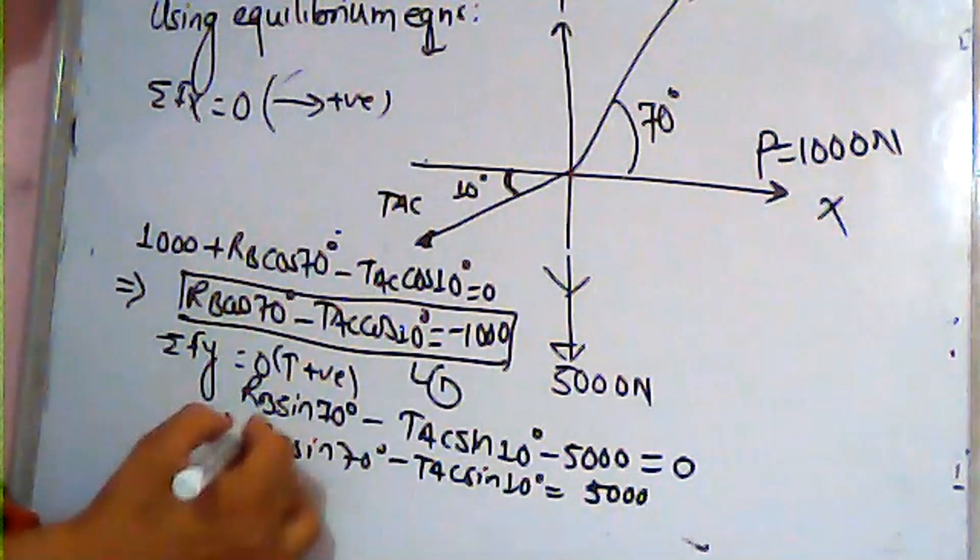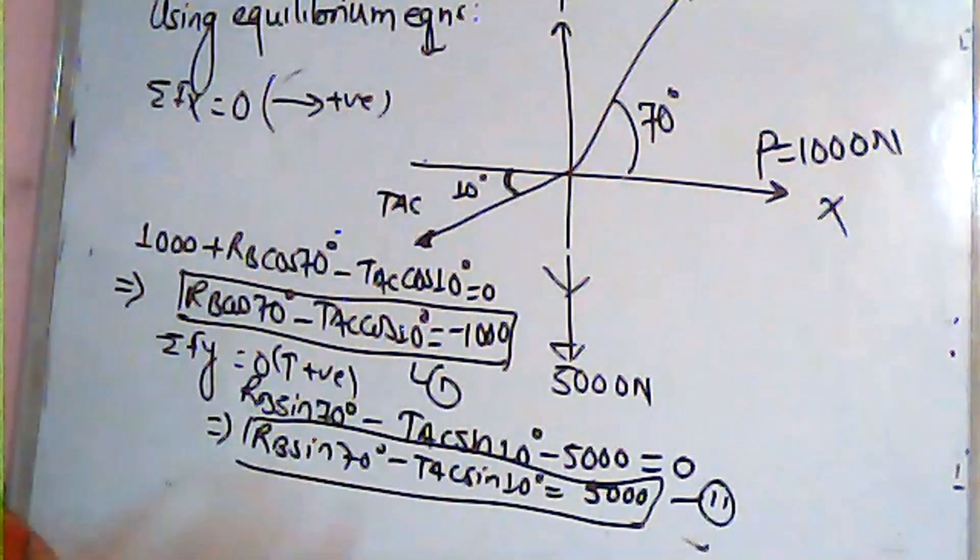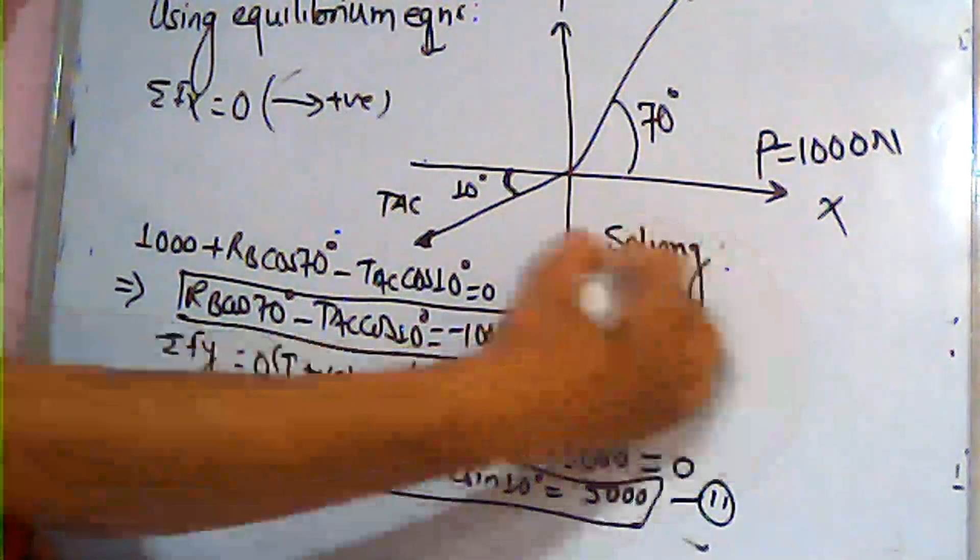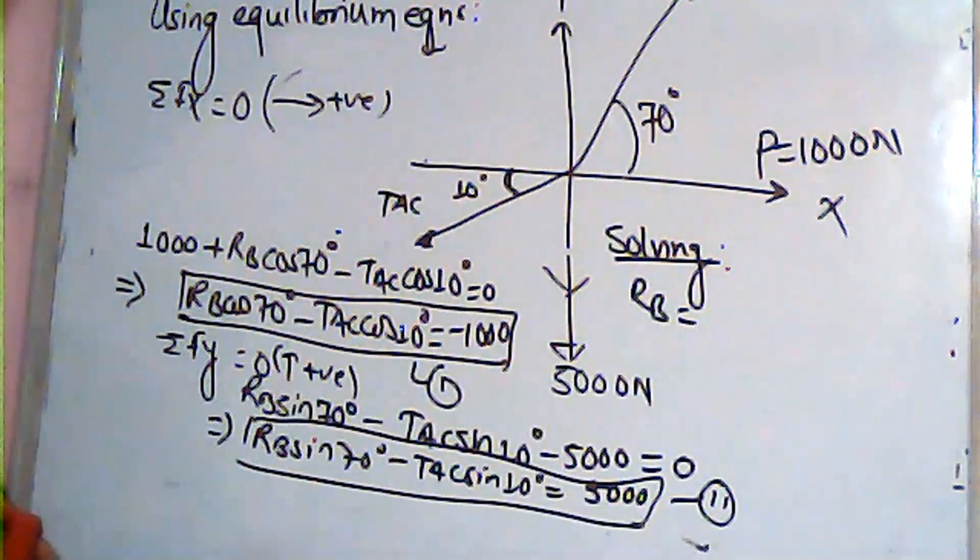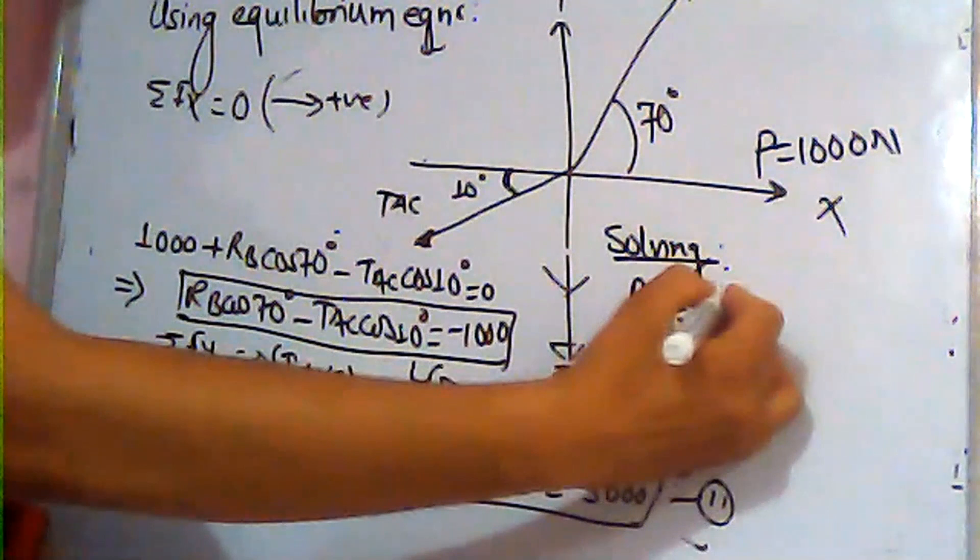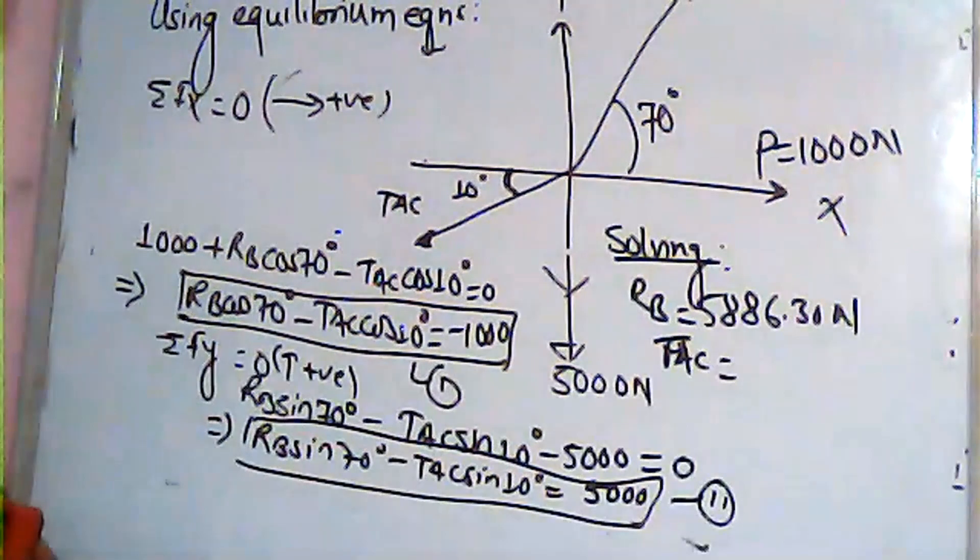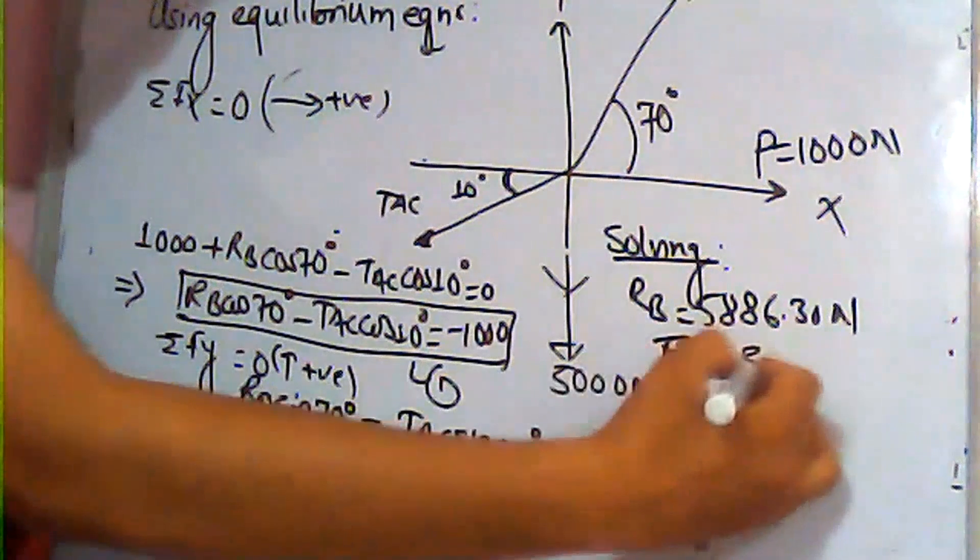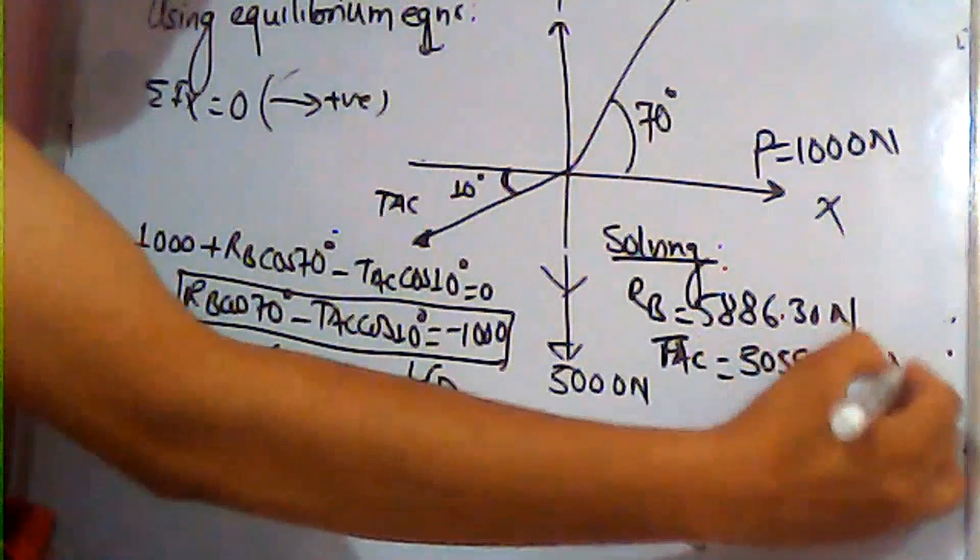So if you solve this, these are two equations with two unknowns. Solving with calculator, you get RB equals 5886.30 newton and TAC equals 5909.72 newton. This is basically the answer.